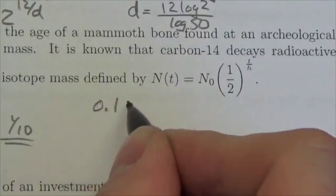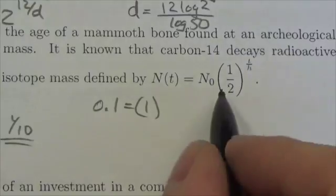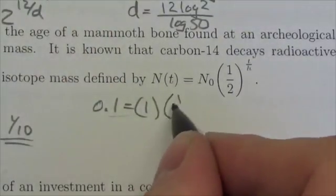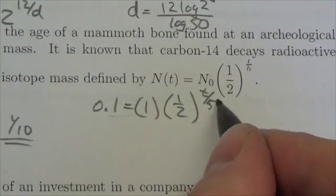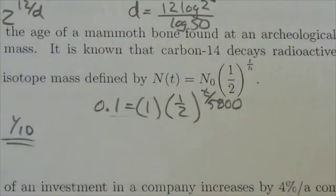So 0.1 is going to equal one, which as long as that ratio stays the same, times one half to the t over 5,800—that's the thing that we're missing—and its half life is 5,800 years.